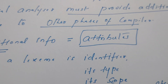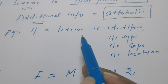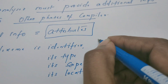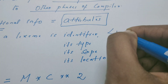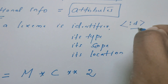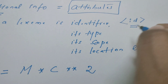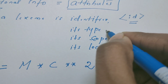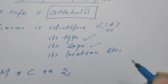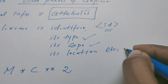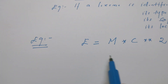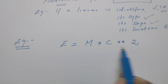For example, if a lexeme is recognized as an identifier, the token name might be 'id'. Apart from the token name, the compiler provides extra information like the type of the identifier, its scope, and its location. This additional information provided by the lexical analyzer to the other phases is called an attribute.